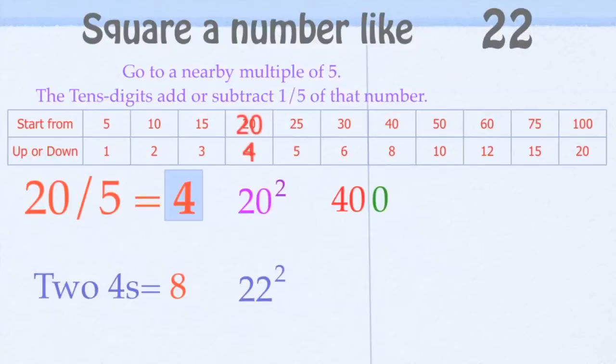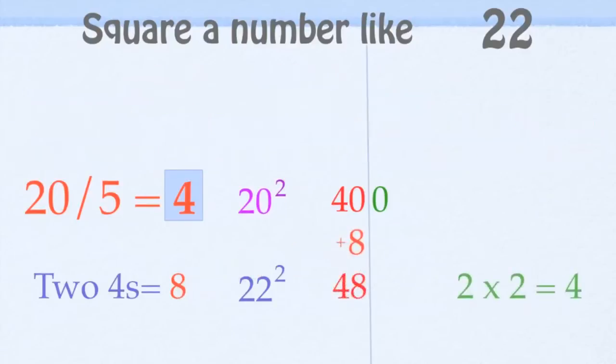Now we're going down two 4's from 40. Adding 8 is 48. And then 22 ends in 2. So 2 times 2 is 4. It's going to end in 4. 22 squared is 484. It's that simple.